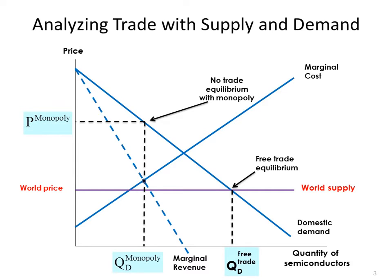Not surprisingly, the no-trade equilibrium with monopoly is considerably worse than the no-trade equilibrium with a competitive domestic industry. For all the usual reasons, the monopolist charges more and produces less.